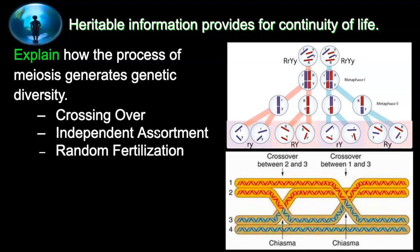Independent assortment happens during meiosis. The chromosomes line up independently of each other during metaphase one — mom's aren't always on the left and dad's on the right. It's a flip of the coin each time, making each daughter cell have a different set of chromosomes. Then random fertilization means any sperm could fertilize any egg. If he has all these different sperm and she has all these different eggs, there are many different combinations that could occur. You want to be able to talk about all three — crossing over, independent assortment, and random fertilization — as they relate to genetic diversity or variation.